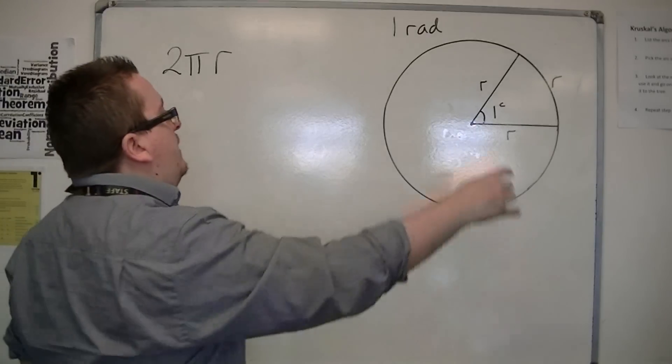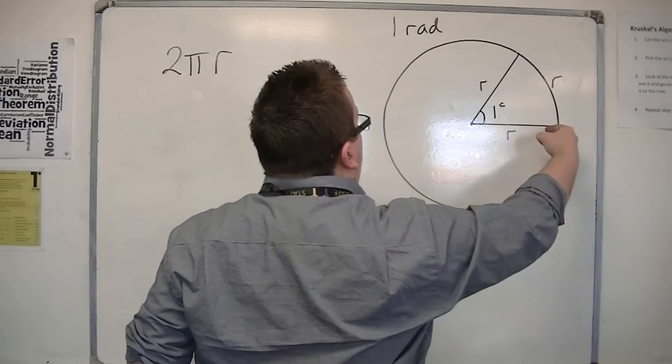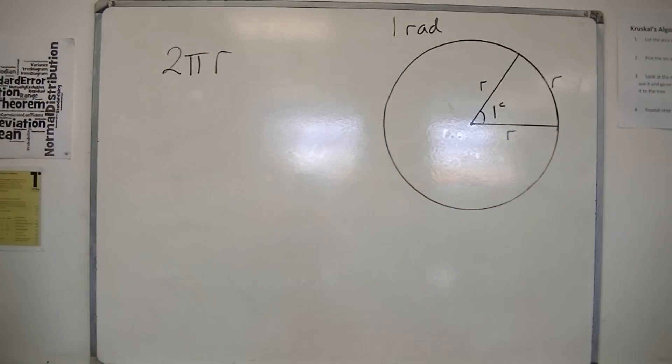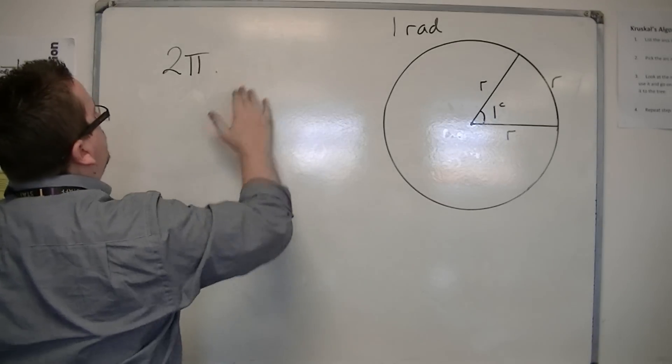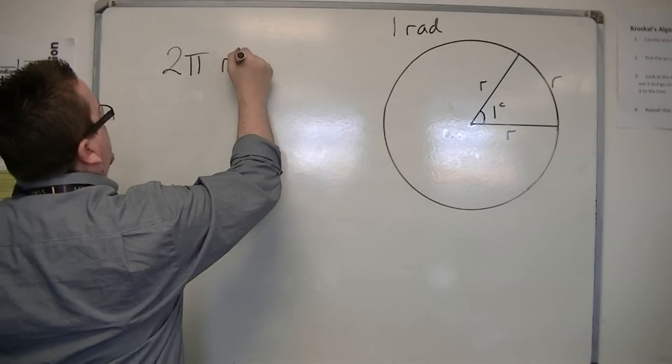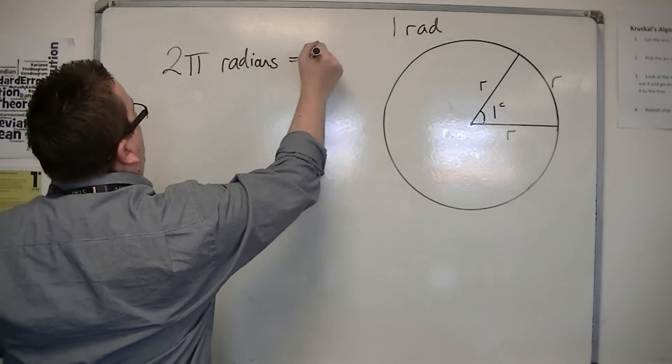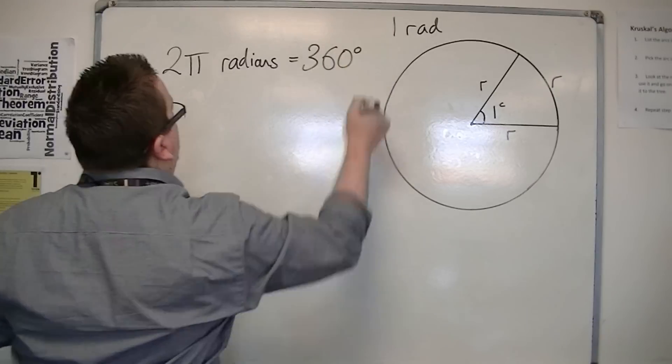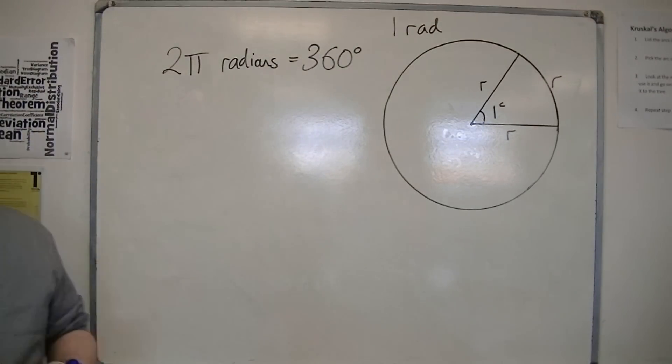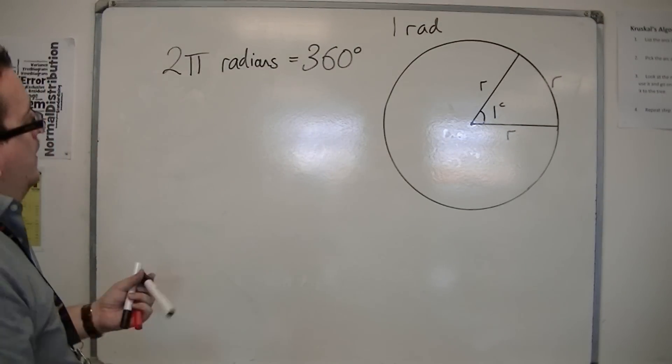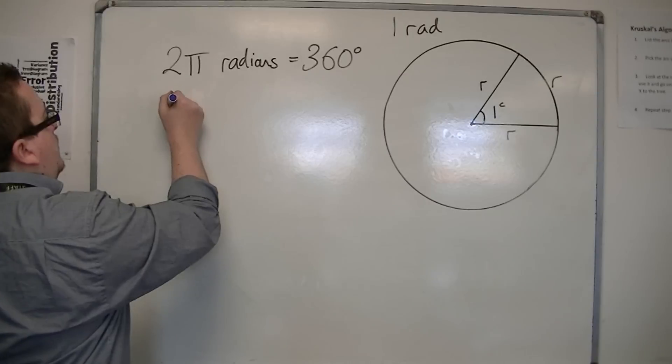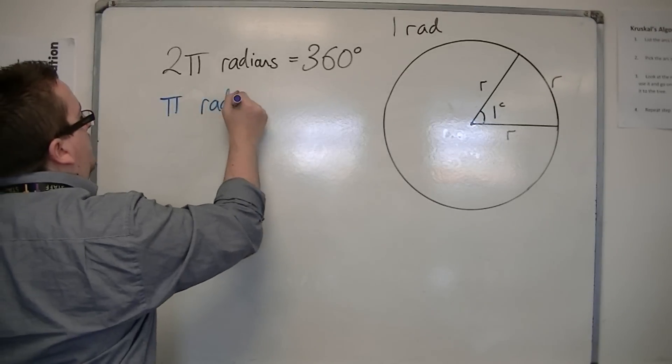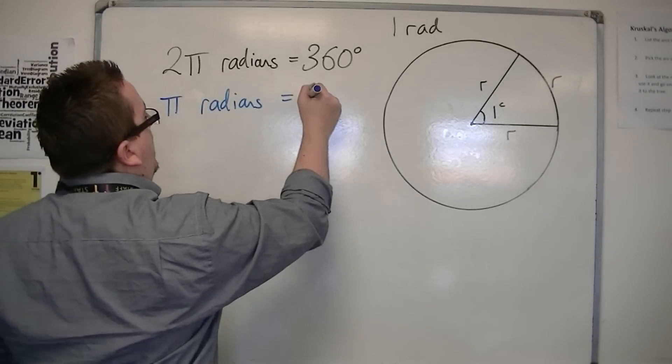So if the whole way around is 2 pi radians, then you're pretty much saying that 2 pi radians is the same as 360 degrees. So if that's true, then pi radians would be 180 degrees.